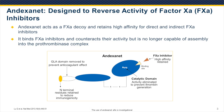Andexanet is a recombinant derivative of factor Xa that's been modified to remove the catalytic activity by changing the active site serine to an alanine. While the N-terminal residue of the molecule was retained to reduce immunogenicity, the glodomane was removed to prevent assembly into the prothrombinase complex.